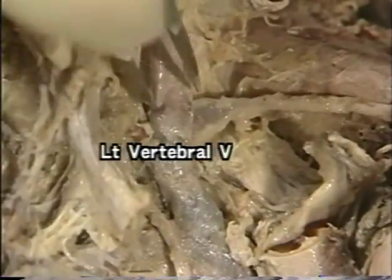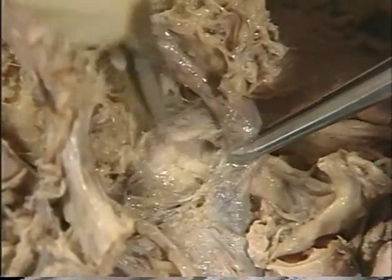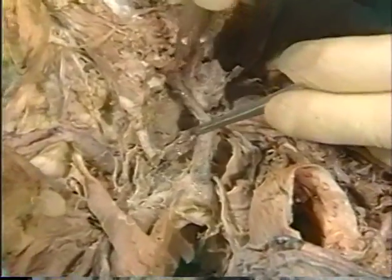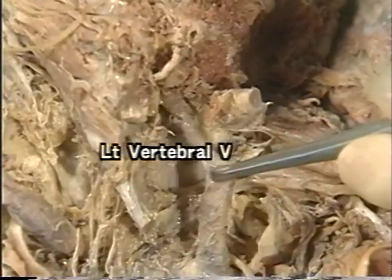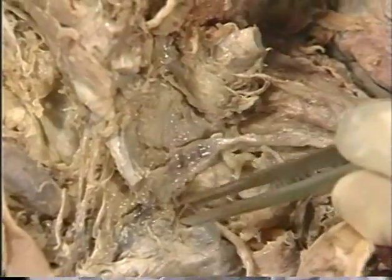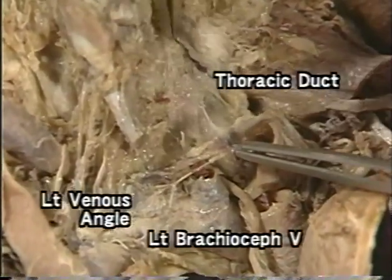A large vein comes into view. The thoracic duct arches ventral to this vein. Tracing this vein, we find that it exits the foramen transversarium of the sixth cervical vertebra; therefore, it can be identified as the left vertebral vein. We cut and remove the left vertebral vein. Finally, we confirm that the thoracic duct drains into the left venous angle. We have demonstrated the para-aortic lymphatics and the thoracic duct from the posterior approach.